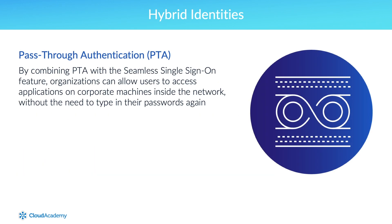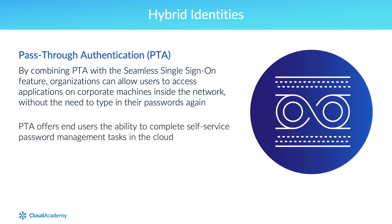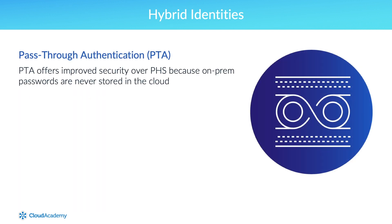By combining pass-through authentication with seamless single sign-on, organizations can allow users to access applications on corporate machines inside the network without the need to type in their passwords again. Azure AD pass-through authentication provides an improved end-user experience because it offers end-users the ability to complete self-service password management tasks in the cloud. Deployment and administration are easy because pass-through authentication only requires a lightweight agent to be installed on-prem, and since the agent automatically receives updates, there is no management overhead.